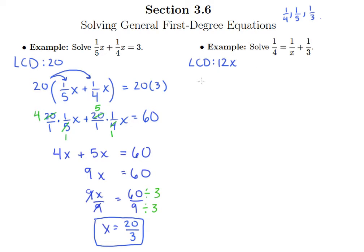So that's our least common denominator. So I will multiply by 12x on both sides. On the left side I can immediately do my reducing. So 12 divided by 4 is 3. 4 divided by 4 is 1. I need to distribute on the right side before I do any reducing.